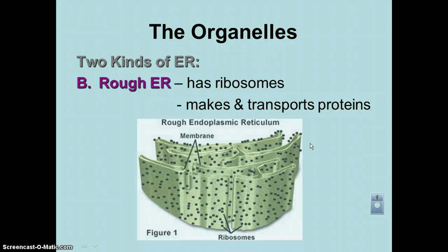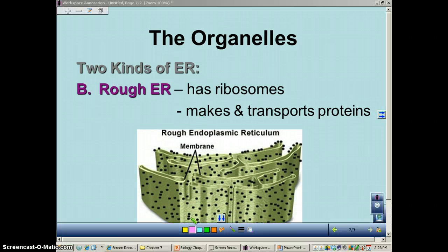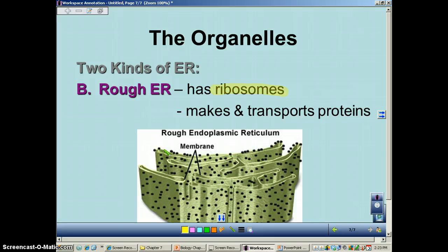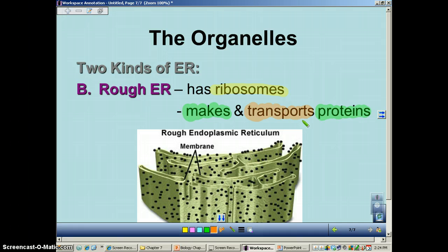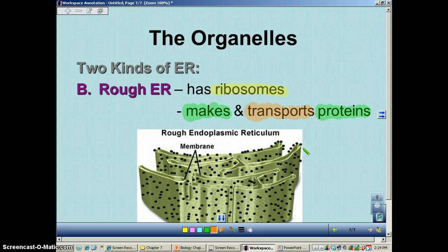The second type of ER is called rough ER. It's called rough ER because it actually contains ribosomes — you'll notice how bumpy the texture looks, and that's how it gets its name. It has two functions. Number one: it makes proteins because it has a ton of ribosomes. Number two: it transports materials. So function one is makes proteins, function two is transports those proteins. If you are a cell that has to make a lot of proteins — for example, cells along your nasal cavity that need to make mucus, or cells in the small intestine producing enzymes to break down food — they will have a ton of rough ERs.